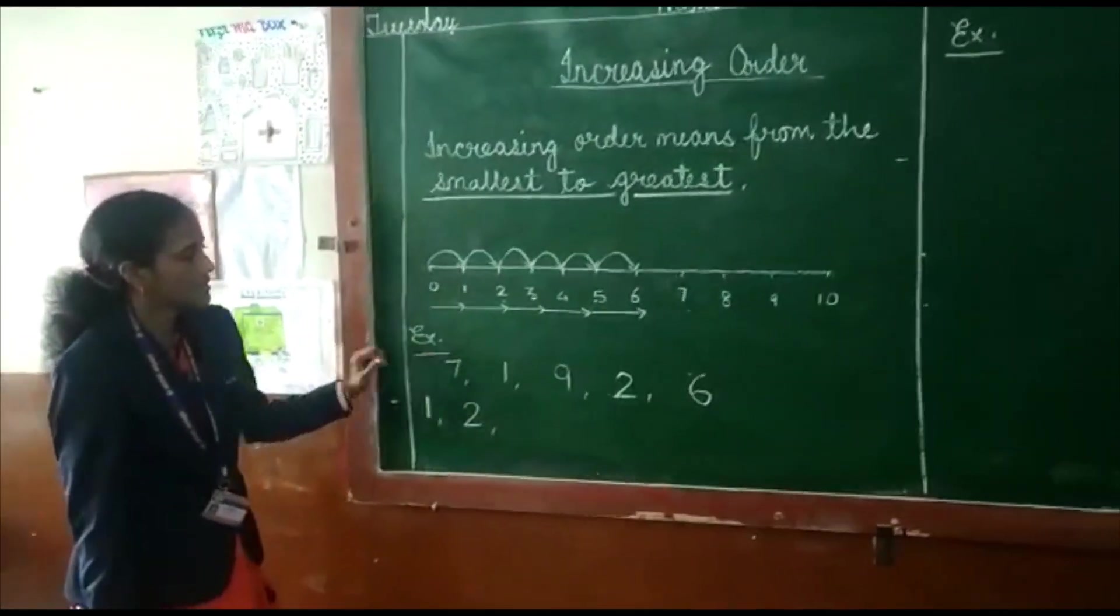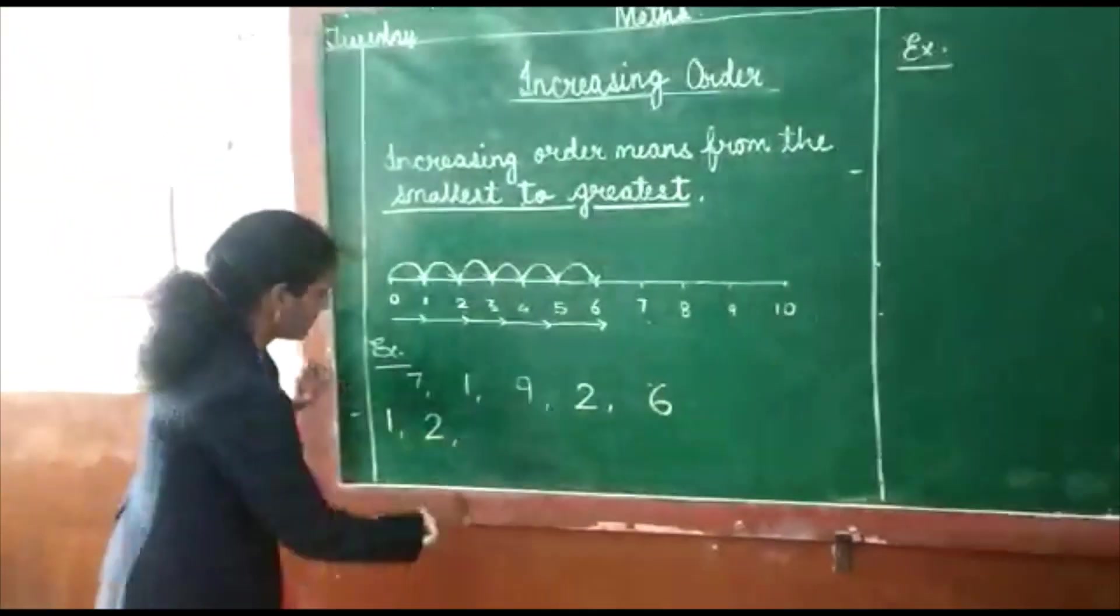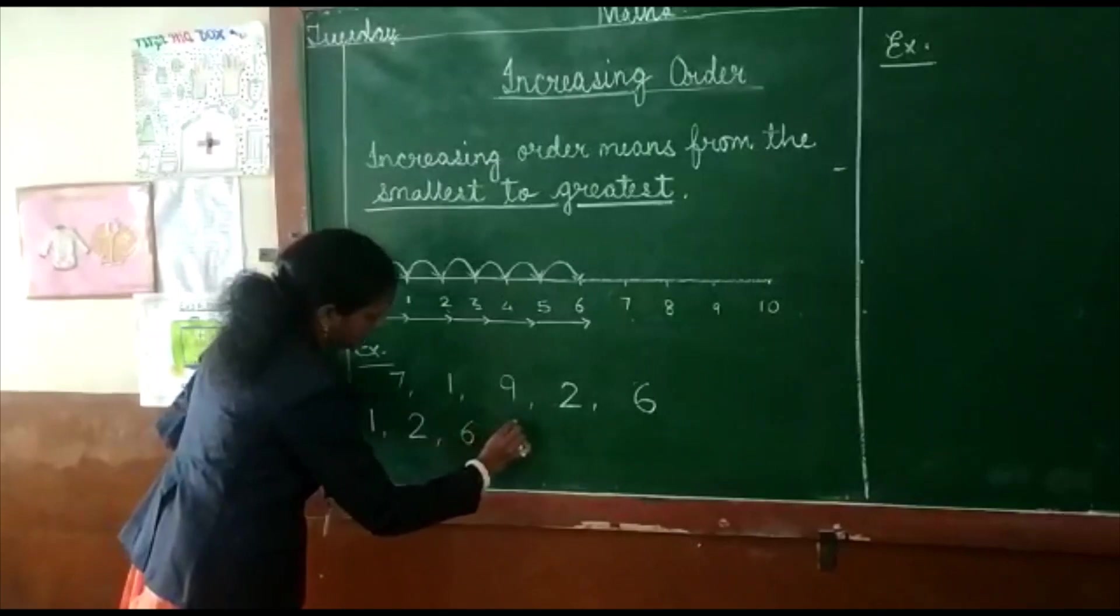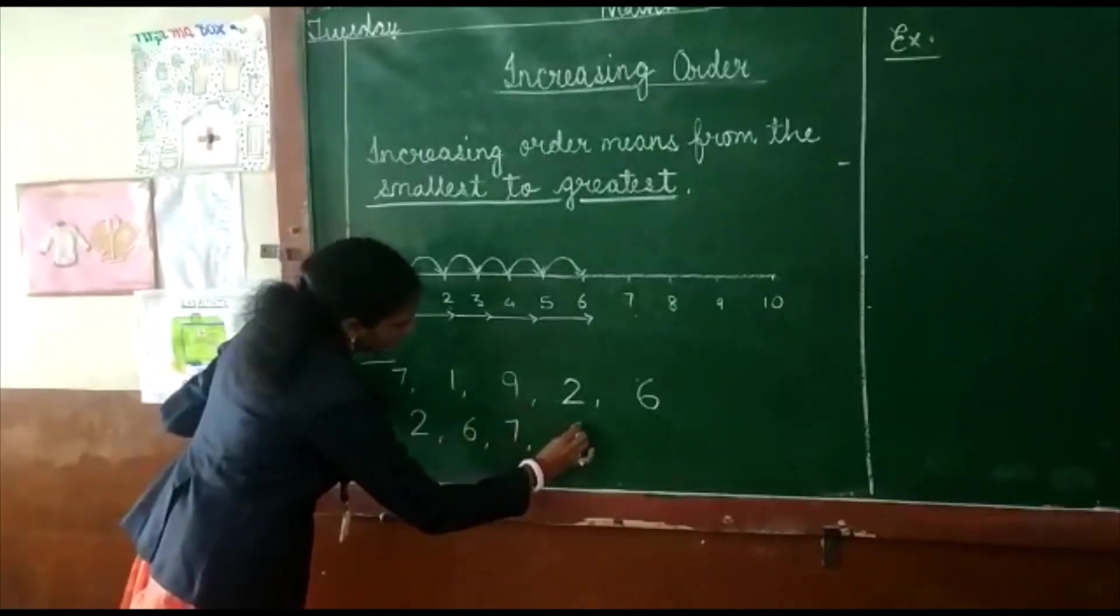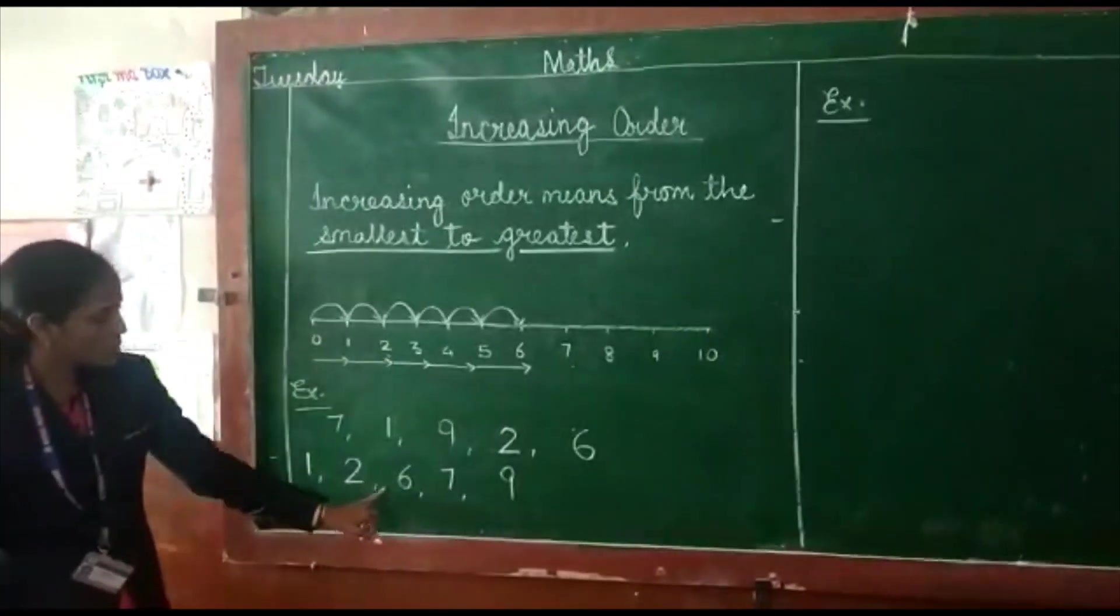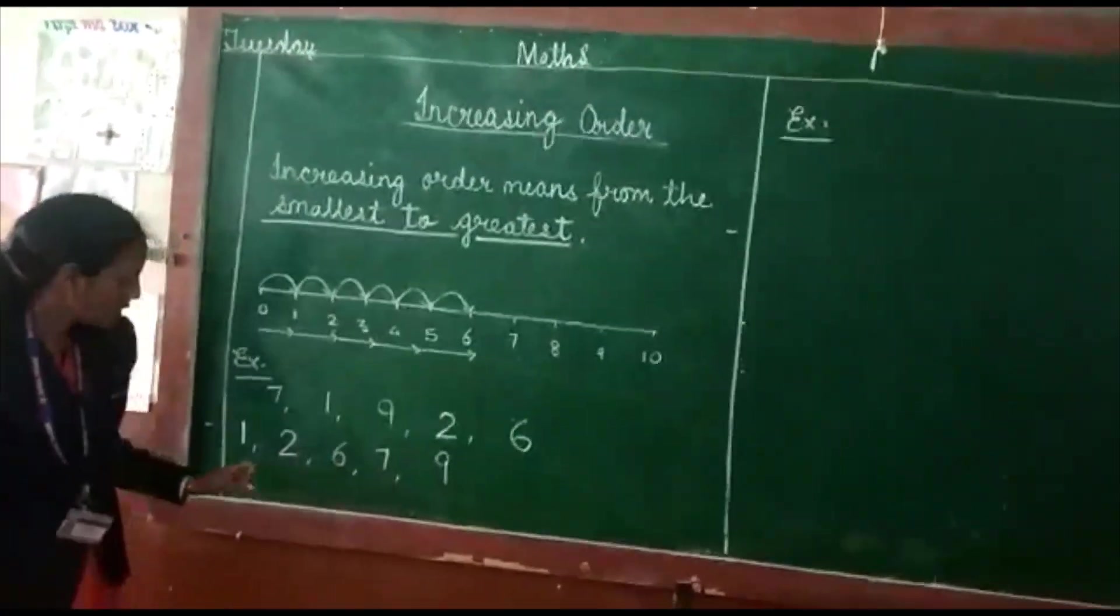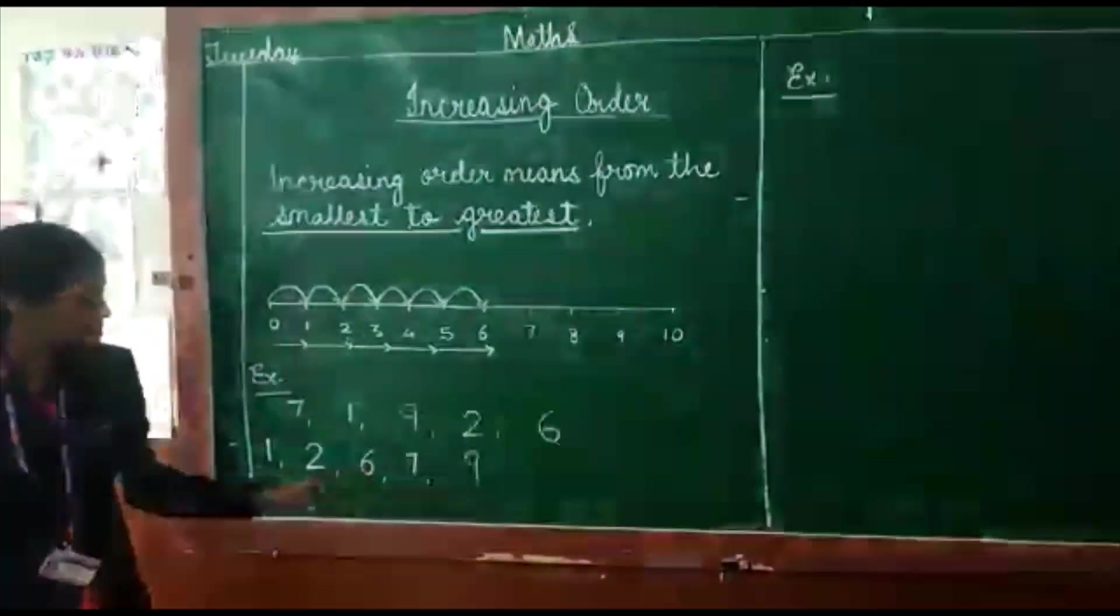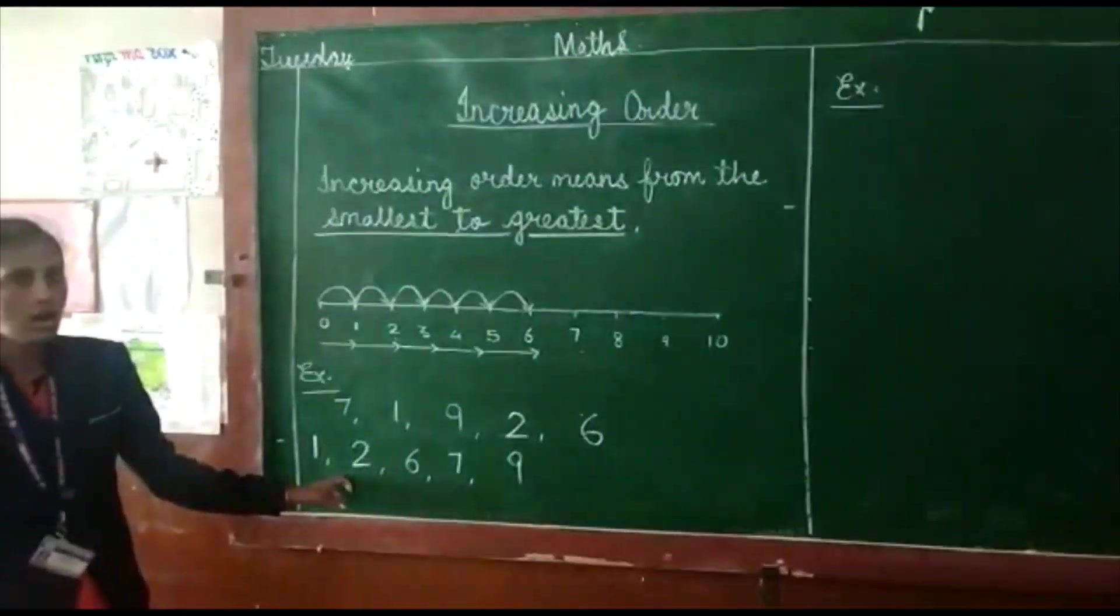Next number is six. Then seven. And the last number is nine. Smallest to greatest. Chote number se bade number ki taraf humne saare numbers ko likha hai. This is our increasing order.